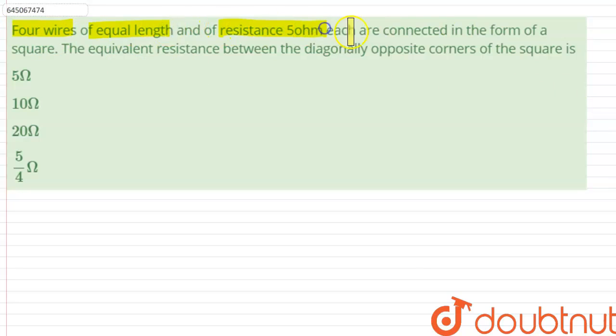...are connected in the form of a square. The equivalent resistance between the diagonally opposite corners of the square is: So the question states that there are four equal length resistances of 5 ohm each, connected in the form of a square.